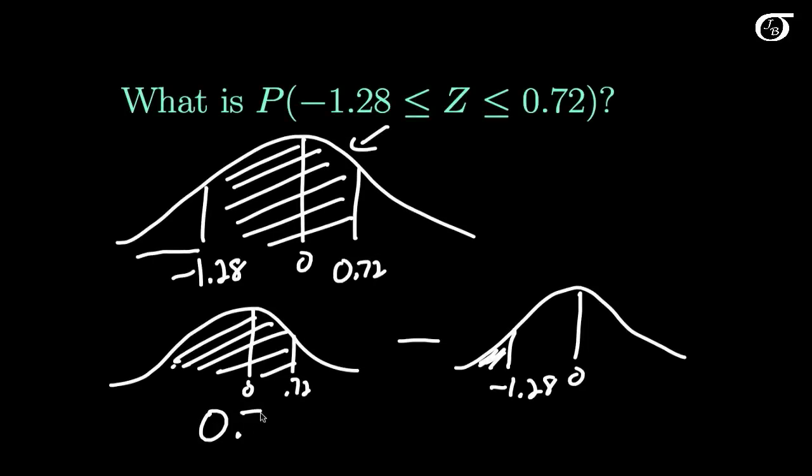We found in the table that this area is 0.7642. We found in the table that this area was 0.1003. We subtract those two, we get 0.6639, and that is our answer.